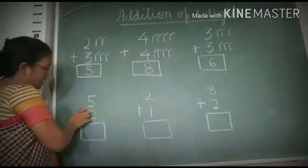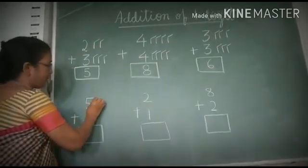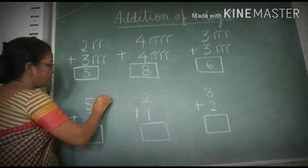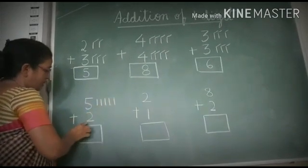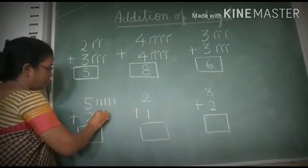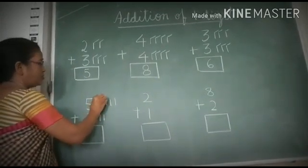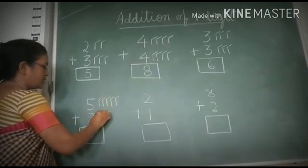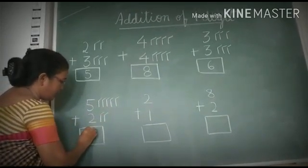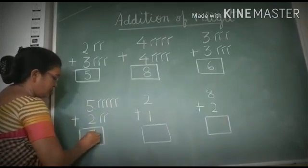Next number is 5. You will draw 5 lines. 1, 2, 3, 4, 5. Next 2. 1, 2. Count all the lines together. 1, 2, 3, 4, 5, 6, 7. You will write here 7.